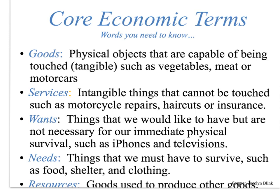Services are intangible things that cannot be touched, such as motorcycle repairs, haircuts, insurance, healthcare, and education. Wants are things that we would like to have but aren't necessarily for immediate physical survival, such as iPhones and televisions. Needs, by contrast, are things we must have in order to survive, such as food, shelter, and clothing. Resources are the goods used to produce other goods — for example, wheat is the resource used to produce cereal, along with the labor, the building, and the equipment used to make it.